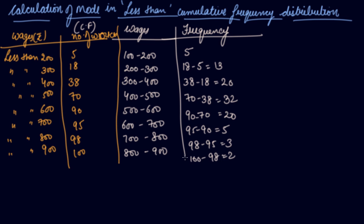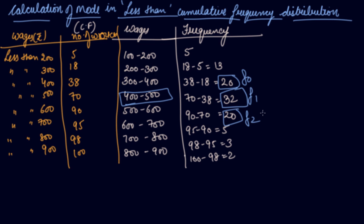The highest frequency we have is 32. So 32 is the modal class — 400 to 500. This is F1, this is F0, and this is F2. We've got all we need to calculate the mode, so we'll put the formula.